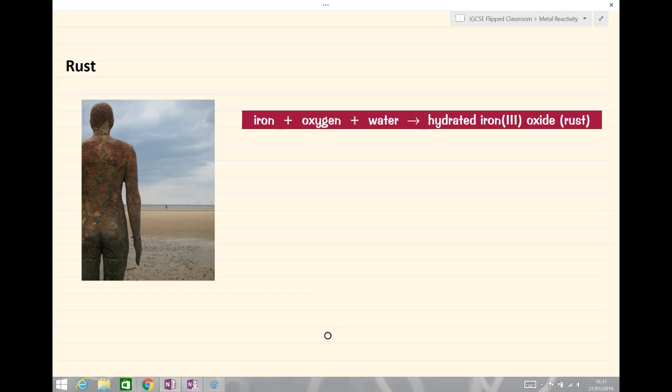which is now no longer in use. So the rust that we describe which is red and crumbly is a special word which describes hydrated iron 3 oxide. Iron 3 oxide and it is very particular for iron and we don't describe any other metal that corrodes as rusting. So all other metals we describe as corroding.